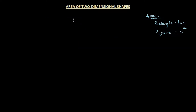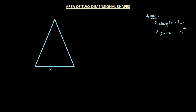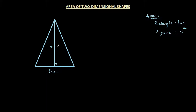Let's consider a triangle. The triangle also has a base and a height. To find the height, we drop a perpendicular from the vertex opposite the base — it forms a 90-degree angle, and let this height be H. But how do we find the area of this shape? The top portion of the triangle is not the same as the base, so obviously it can't simply be base times height.